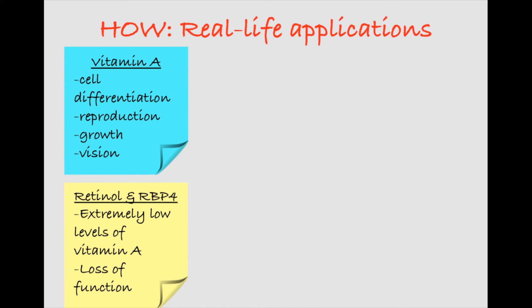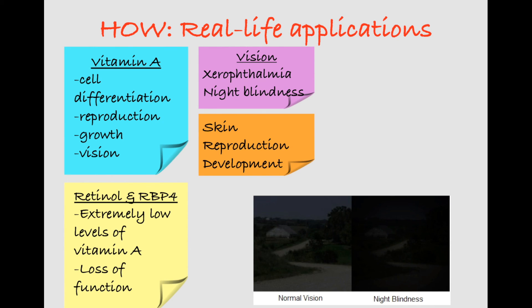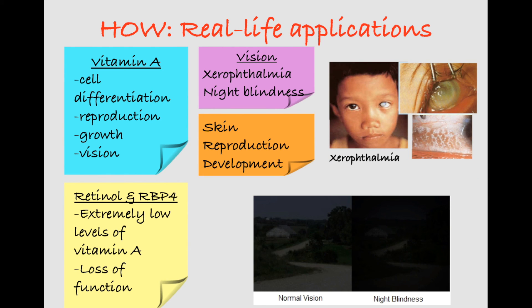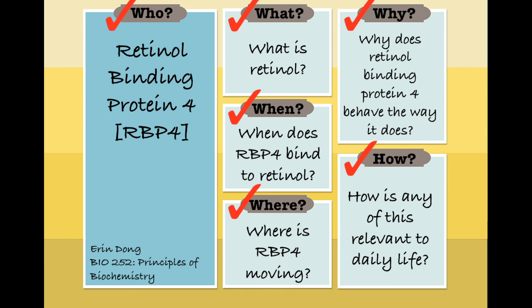But long periods of vitamin A deficiency can cause detrimental effects. Low dietary intake of vitamin A or RBP loss of function can lead to impaired night vision, also called night blindness. Often times, children in developing countries are seen to have xerophthalmia, which means that they have extremely dry eyes. In addition to these health issues, vitamin A deficiency can also lead to defective embryonic development, weakened immune systems, and thick and dry skin. And that sums up the who, what, when, where, why, and how questions for our protein.